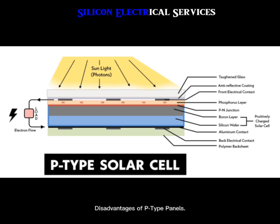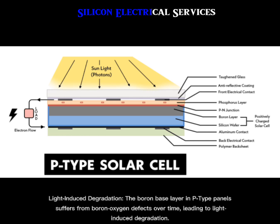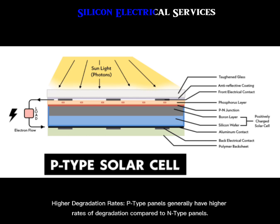Disadvantages of P-Type panels. Light-induced degradation: the boron base layer in P-Type panels suffers from boron-oxygen defects over time, leading to light-induced degradation. Higher degradation rates: P-Type panels generally have higher rates of degradation compared to N-Type panels.